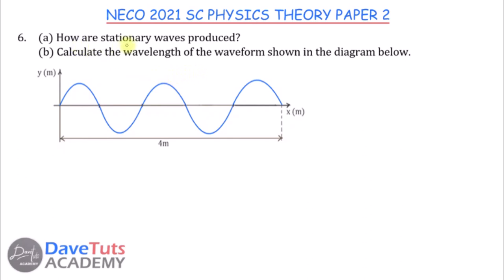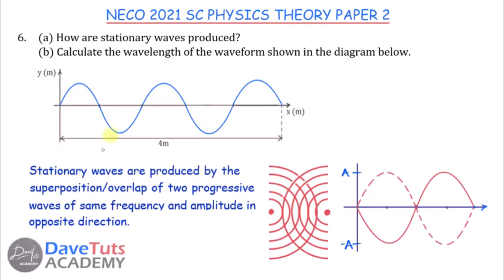This question asks how stationary waves are produced and to calculate the wavelength of a given waveform. Stationary waves are produced by the superposition of two progressive waves having the same frequency and same amplitude but moving in opposite directions. As one moves along the solid line and the other along the broken line, they cancel each other out cumulatively at any instant, producing a stationary wave.